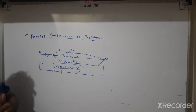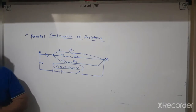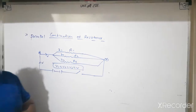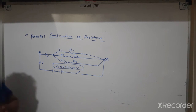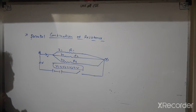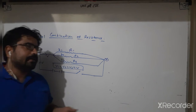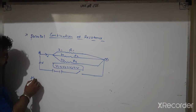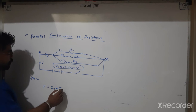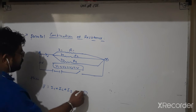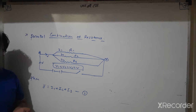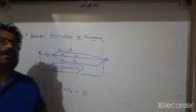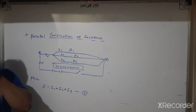Definition of parallel combination: when two or more than two resistances are connected in parallel combination, electric current is different but electric potential remains the same. So we write I = I1 + I2 + I3 as equation 1. Electric potential is the same but electric current is different.